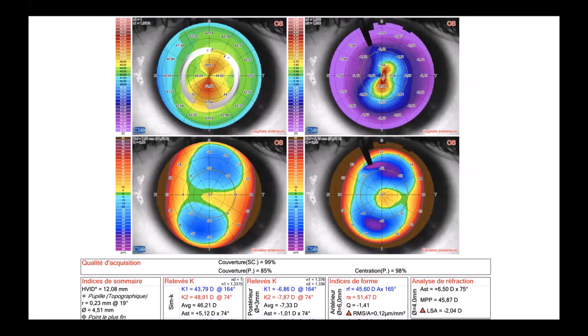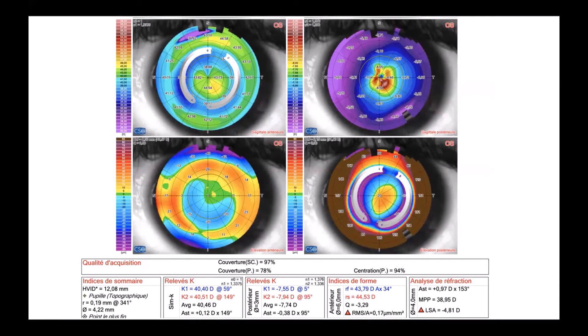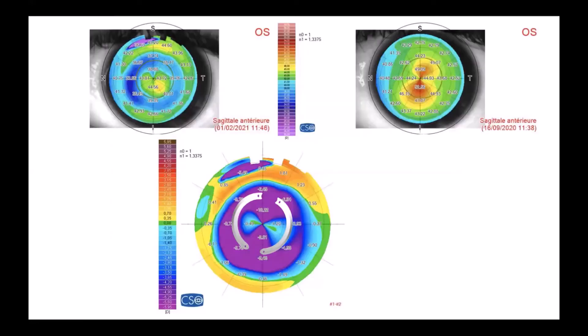I put two intracorneal rings. In the posterior topography of the cornea, you can see the shape of the posterior elevation, which clearly corresponds to the location of the corneal rings. We can guess from the asymmetric intracorneal rings inside the cornea — looking at the differential map — that it acts only on the flattest axis. The result was very good because of the symmetry of this keratoconus.